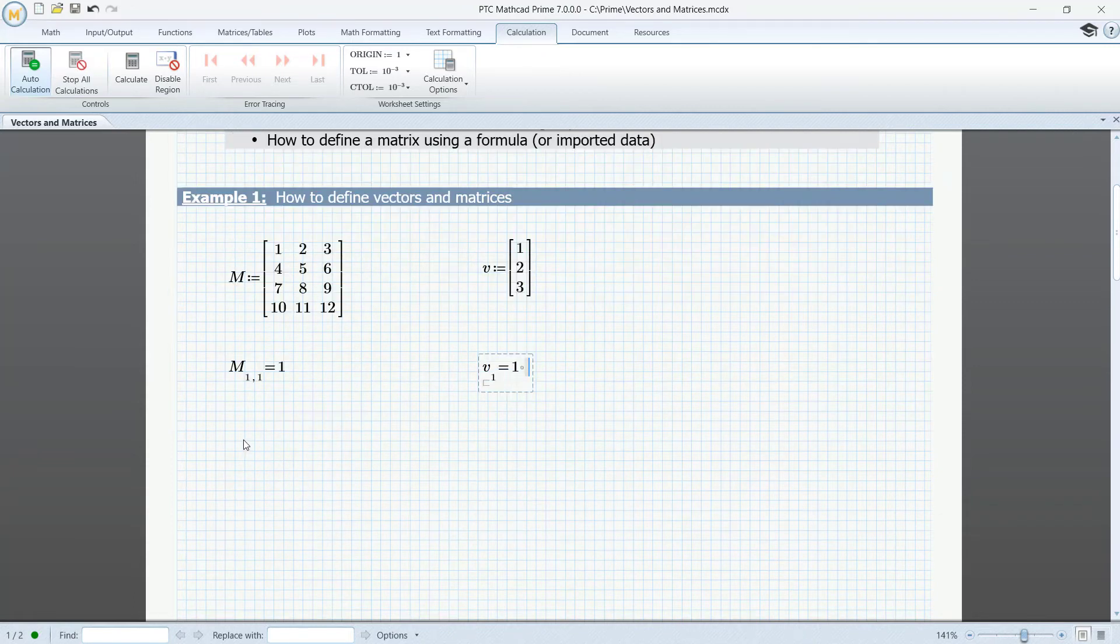Matrices can also be created with shortcuts alone. So, define M, colon, equal, then press left square bracket, 1, and for the next row element, press Shift, spacebar, 2, Shift, spacebar, 3. To create a new row, press the tab key,